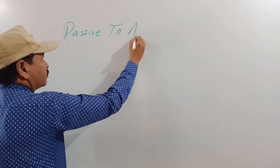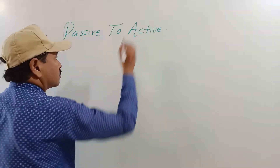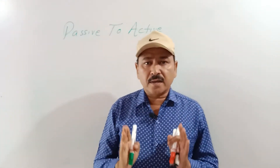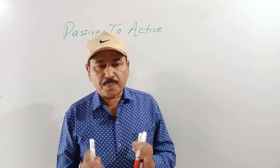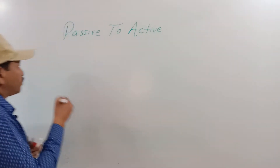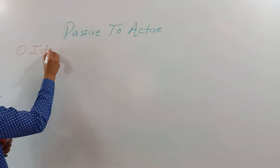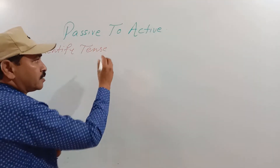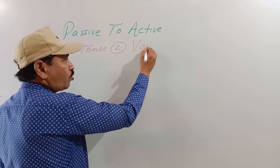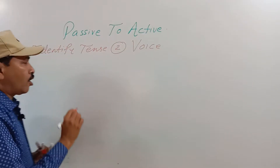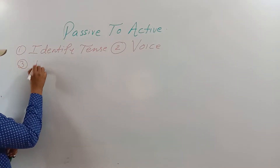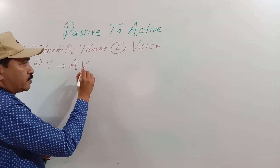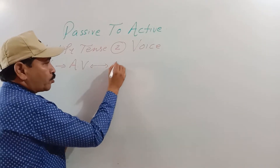Passive to active — आपको क्या करना है? सबसे important बात: don't make hurry, गड़बड़ करनी नहीं है। आपको first step है identify voice। और third step में अगर वो passive है तो उसे आपको active करना है, और अगर वो active है तो उसे आपको passive करना है।